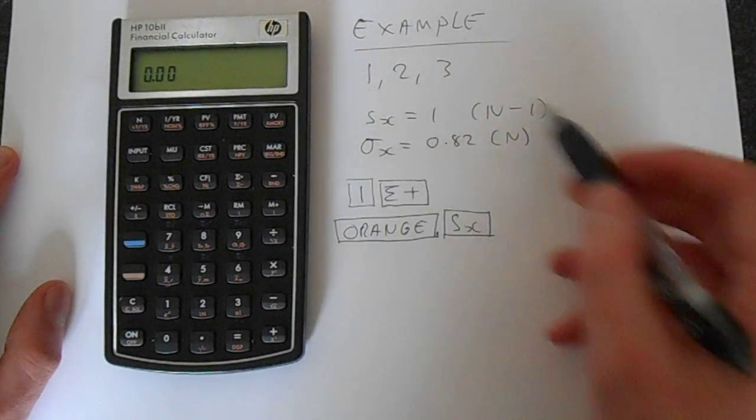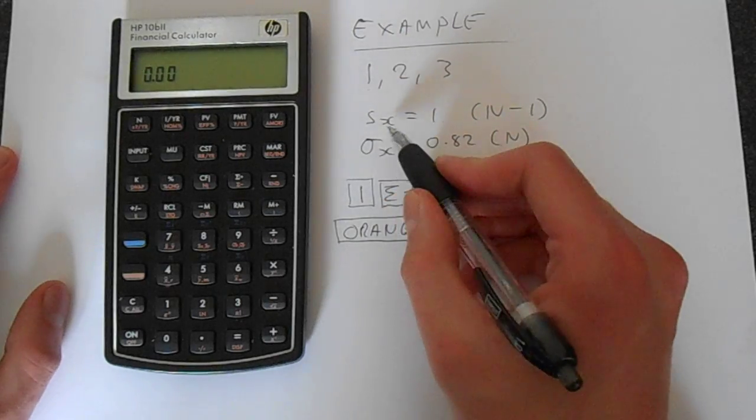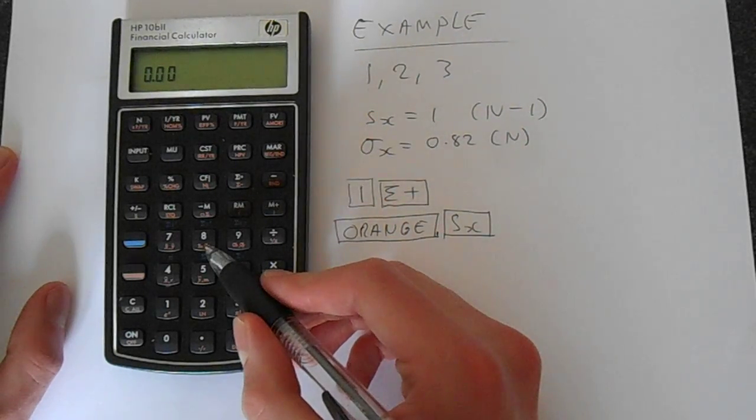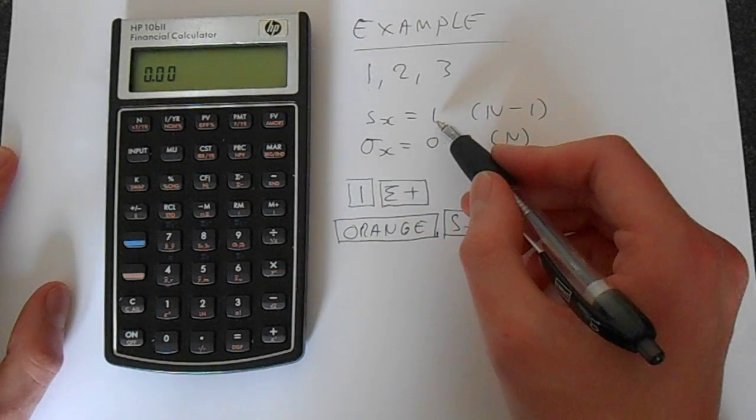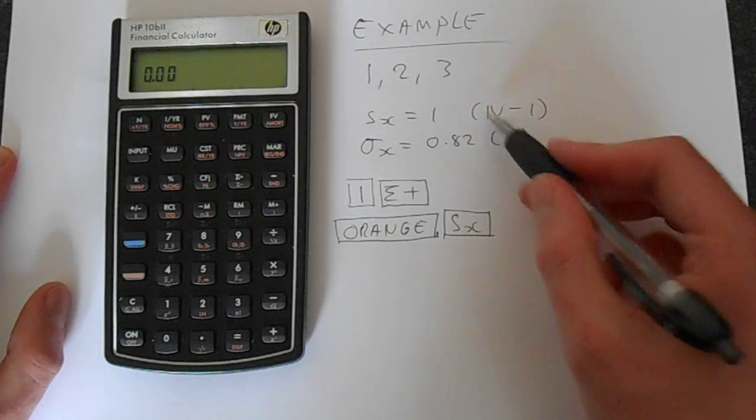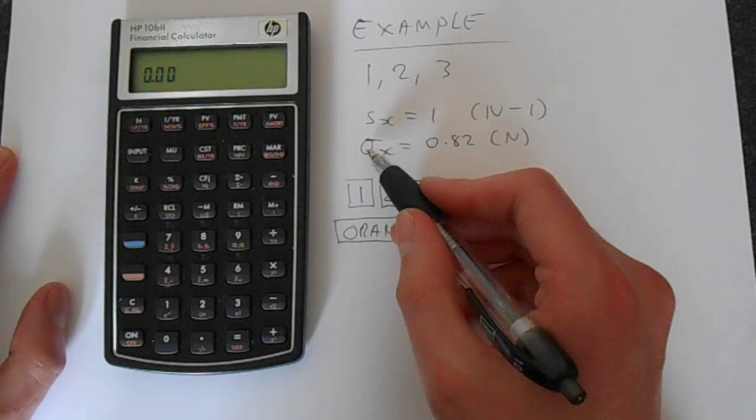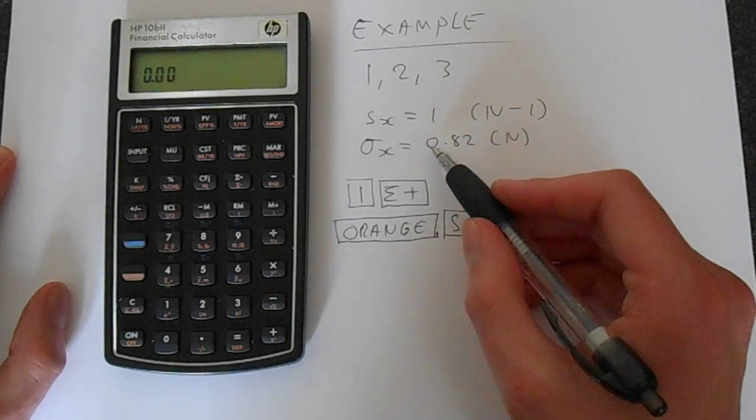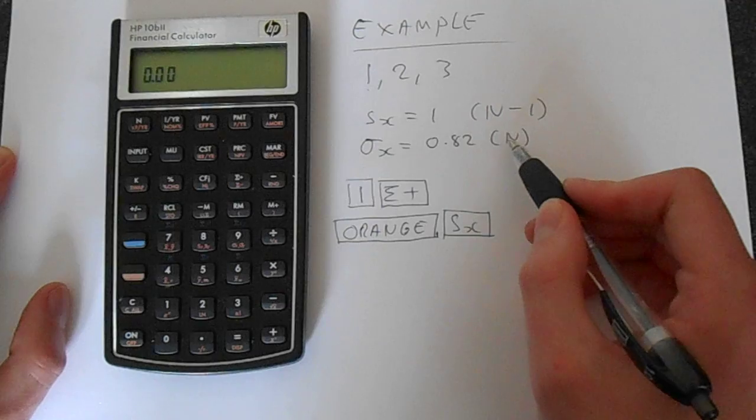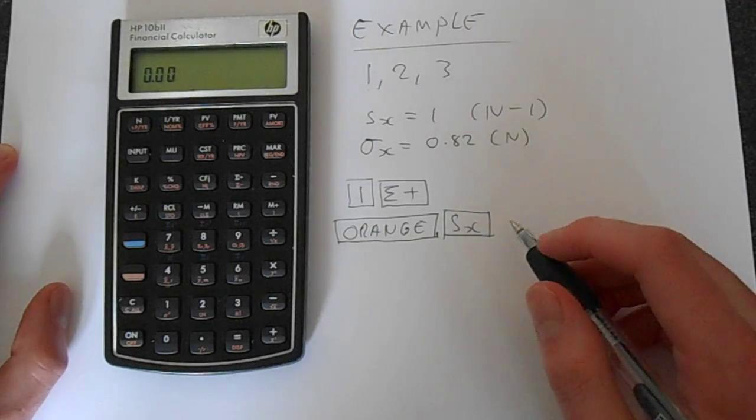And the result that we'll get is these two numbers. This is Sx, which is here on the calculator, and this is 1. And this is based on the n-1 definition of standard deviation, so you would be dividing by n-1. And on this sigma x, you're getting 0.82, and this is based on the n definition of the standard deviation.